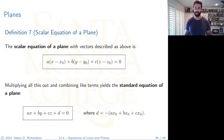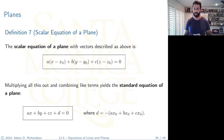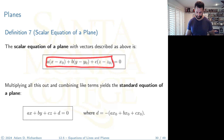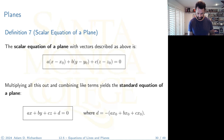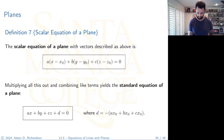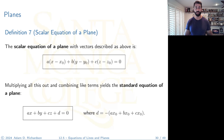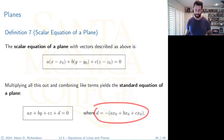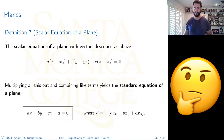Multiplying out and combining like terms gives the standard equation of a plane: ax + by + cz + d = 0, where d = −(ax₀ + by₀ + cz₀). Ponder this for a minute and look at the structure.